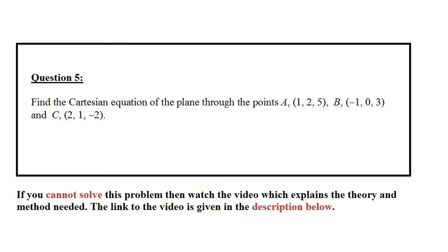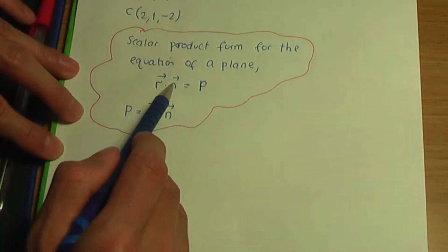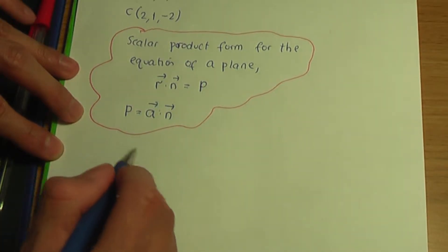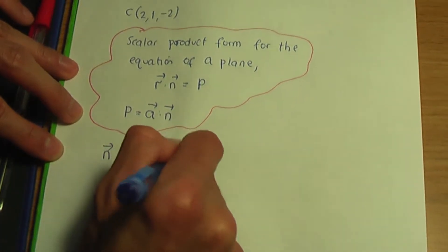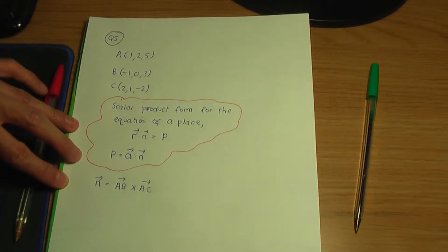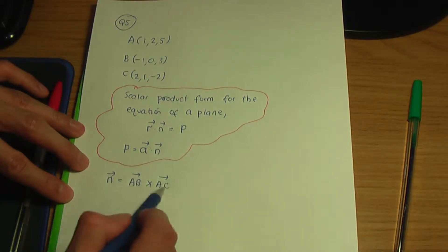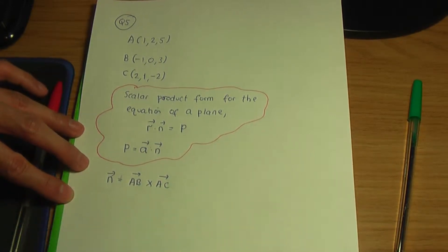Going back to the question, we need the Cartesian equation of the plane passing through points A, B, and C. In order to work out the normal vector — that is, a vector perpendicular to the plane — it can be found by working out AB cross AC. So to work out the normal vector N, it's the vector AB cross the vector AC. We need to work out vectors AB and AC in order to compute this cross product.